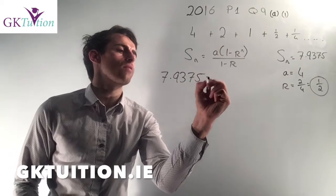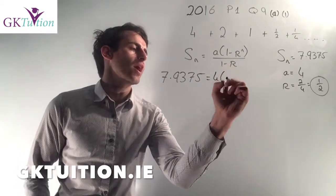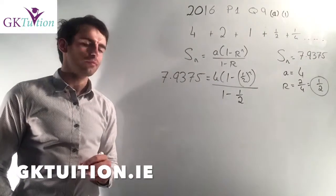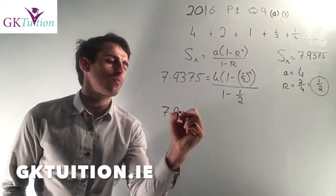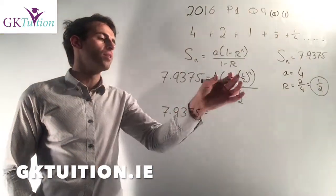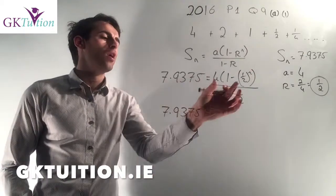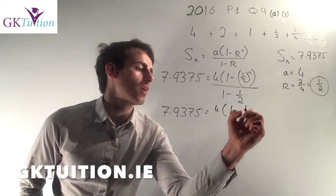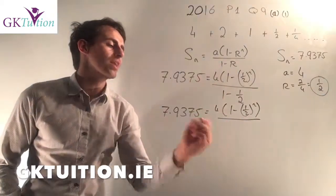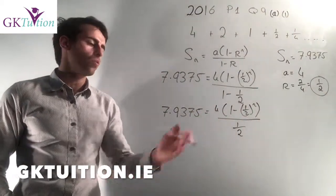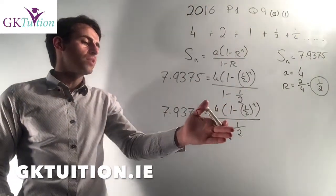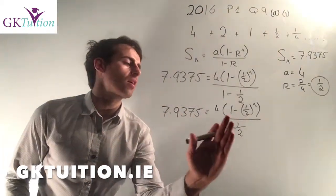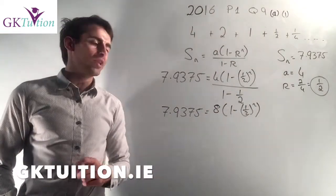So I'll substitute in: my S_N is 7.9375, my A is equal to 4, and in the brackets I've got 1 minus a half to the power of N, divided by 1 minus R which is 1 minus a half. When you have an unknown in the power — a half to the power of N — avoid multiplying out the bracket. The easiest thing is to just leave the top line as it is. 1 minus a half is just a half, and then I can ask how many times does a half divide into 4 — clearly a half divides into 4 eight times. So I can write this as 8 times 1 minus a half to the power of N.